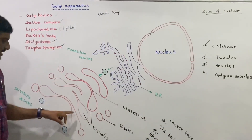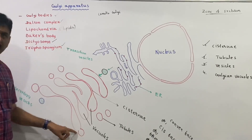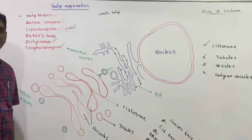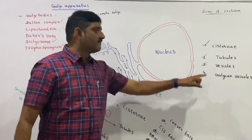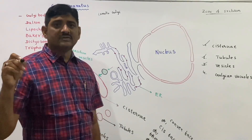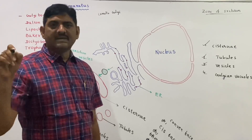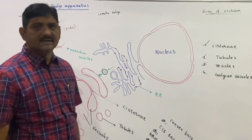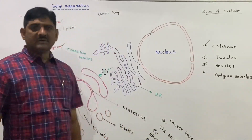The third component is vesicles. Vesicles are small structures that are pinched off or budded from the cisternae and tubules. The fourth component is Golgi vacuoles — these are large, spherical-shaped structures associated with the tubules.